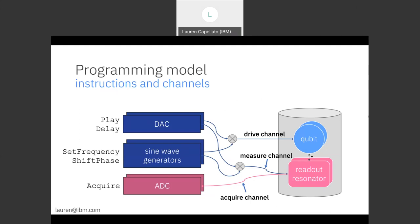The set frequency and shift phase instructions are setting that phase and frequency and playing it through a continuous sine wave generator. So the output tone will get mixed in with the output of the DAC and get sent through a signal channel to the qubit.